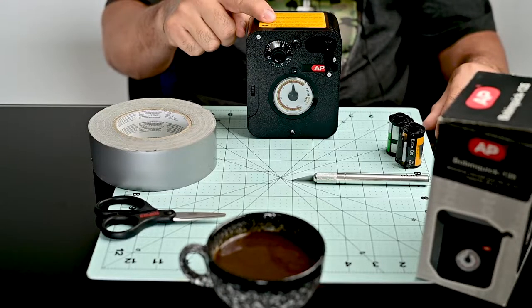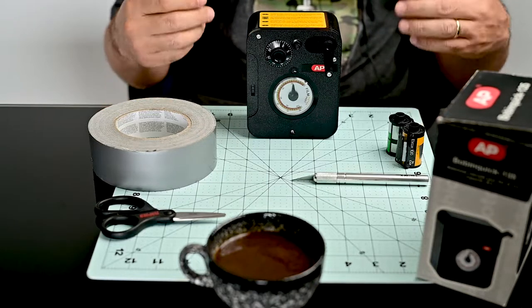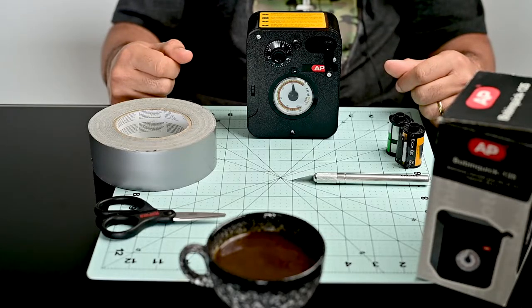I'm using the AP Bobbin Quick 135. And if you wonder why 135, it's the film format, like I explained in the video before. Now that we have everything at hand, let's cut a little piece of tape that is going to secure the two pieces of film that goes from the bulk loader to the empty canister.